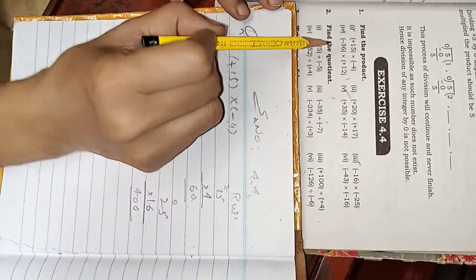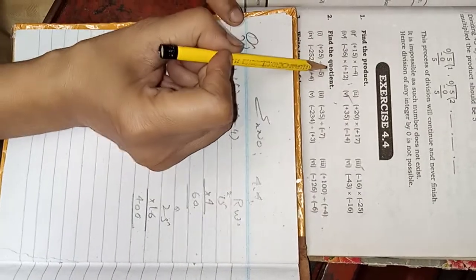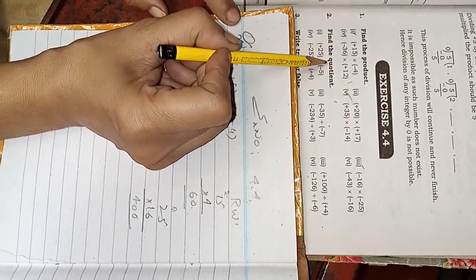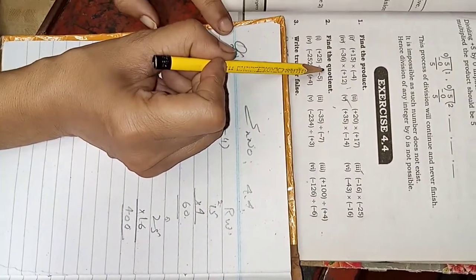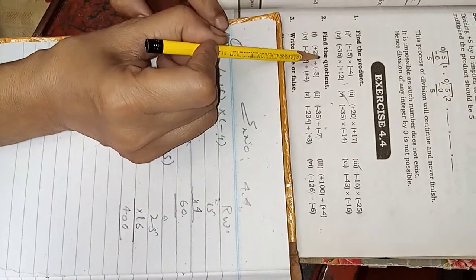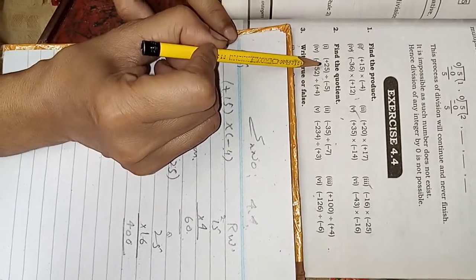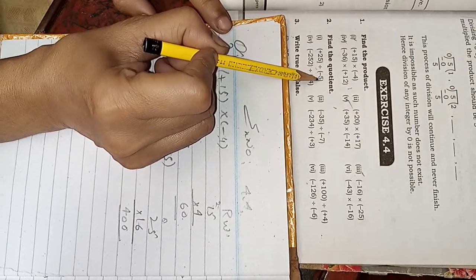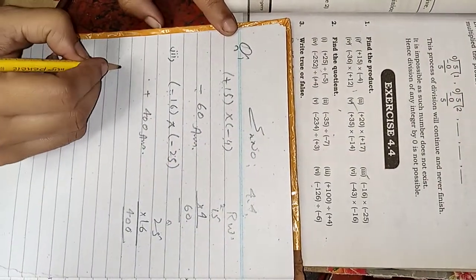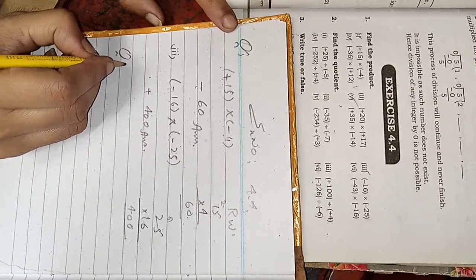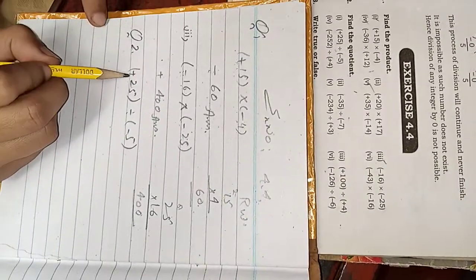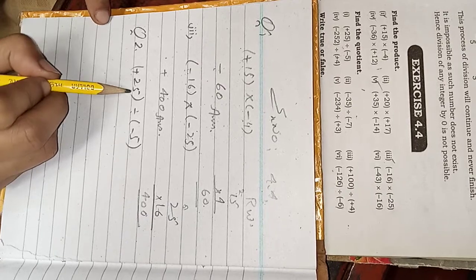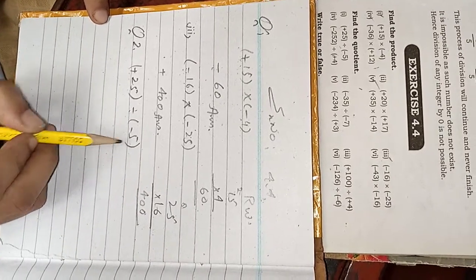Now we have the second question. The question is presented in division. Question is find the answer in division form. Here we have our question: find out integers are divided. Plus 35 divided by minus 5. How do we follow?